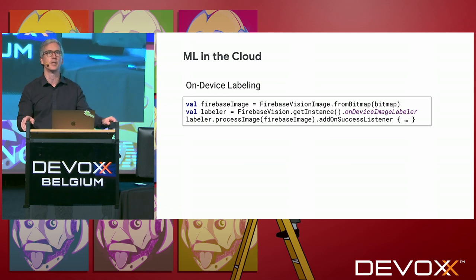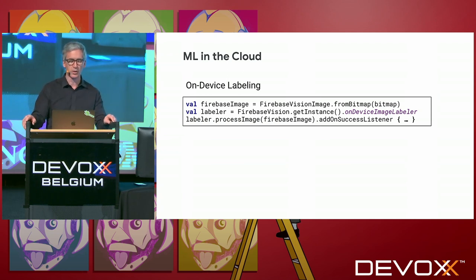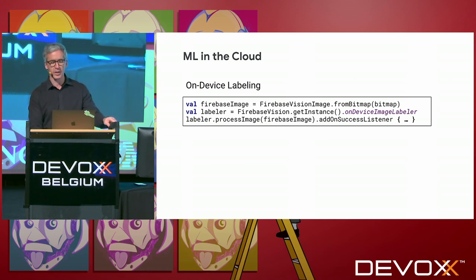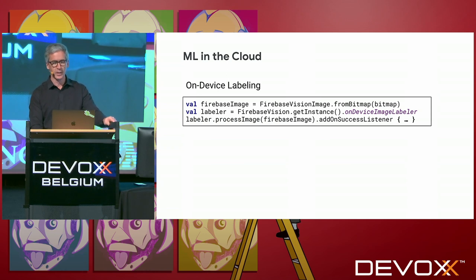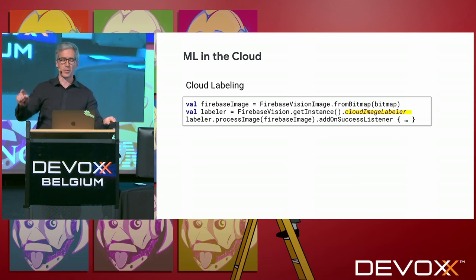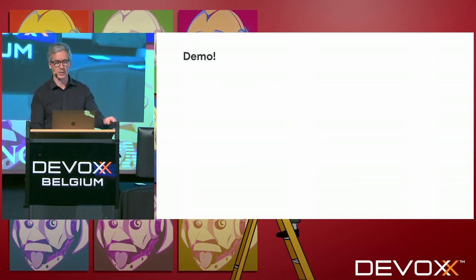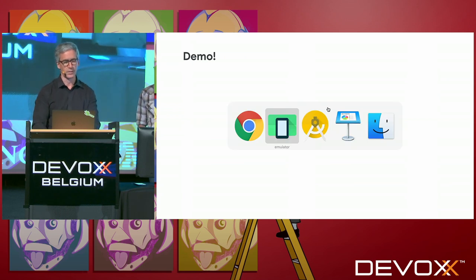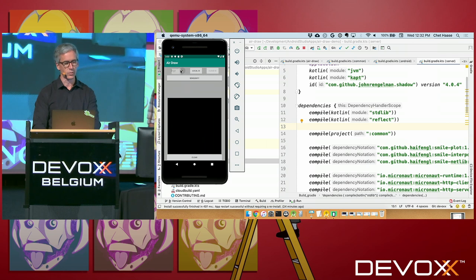Firebase has much larger models and can spend more time and resources on this thing and hopefully return more interesting results. This is what we did for on-device labeling: get our vision image, get an instance of the on-device image labeler, process the image and sit in our callback asynchronously until we get the results. But instead of on-device image labeler, we call cloud image labeler. And that's really all you need to do. So now instead of querying the local device and the local model, it's going to be calling Firebase APIs up in the cloud. It's going to take a little bit longer in this asynchronous call. Here's what it looks like: we return to our awesome demo, clear this, change this to shape detection.